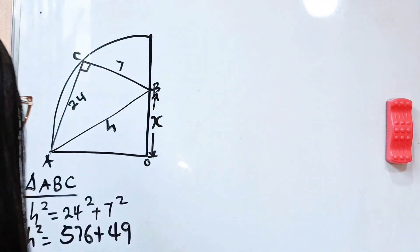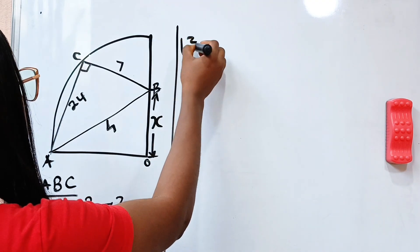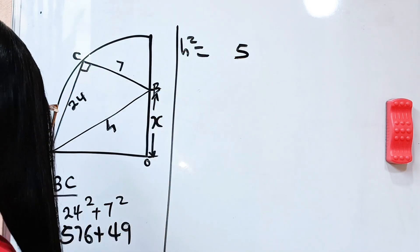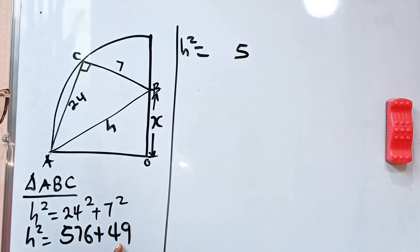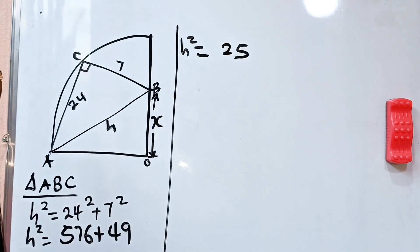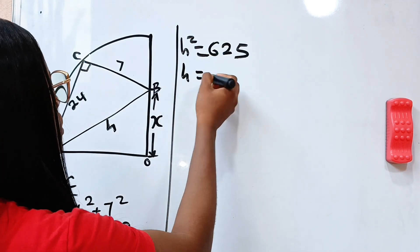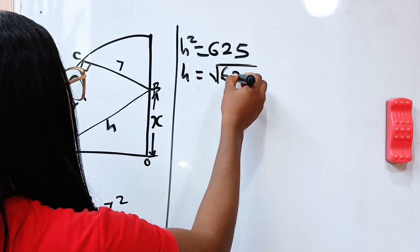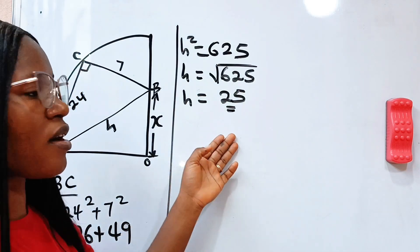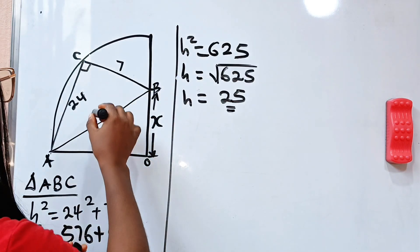So adding 576 plus 49, we get H squared equals 625. Taking the square root of both sides, H equals 25. We know that 25 squared is 625, so the length from A to B is 25 units.